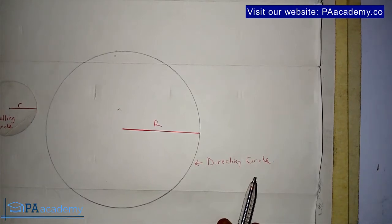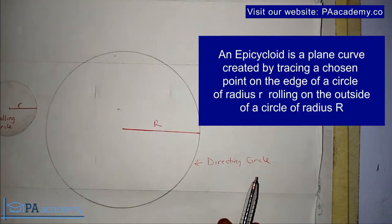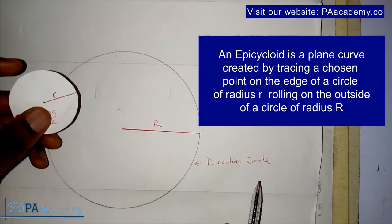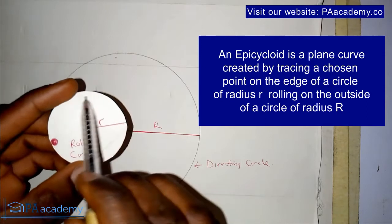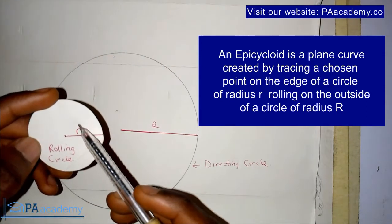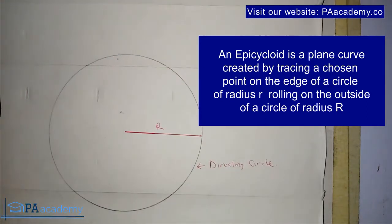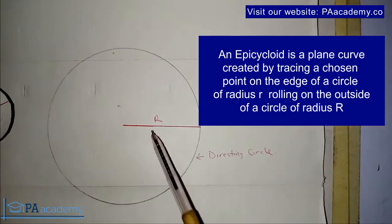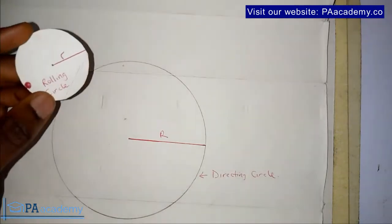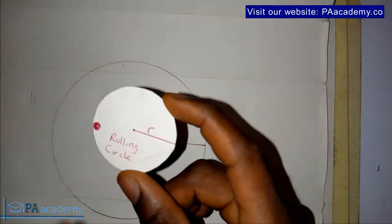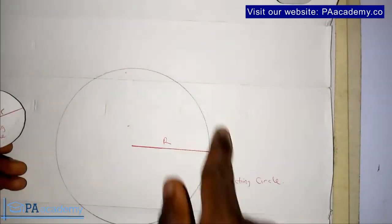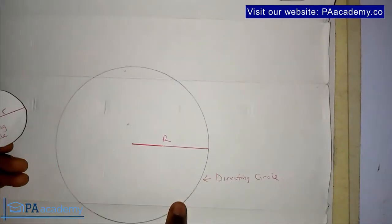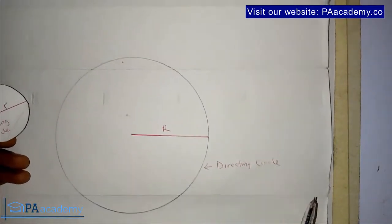According to the definition of epicycloid, it is a plane curve created by tracing a chosen point on the edge of a circle of radius r — that means on the edge of this circle with radius small r — rolling on the outside. Now I said on the outside, which means this particular rolling circle will be rolling on the outside of the bigger circle with radius capital R.